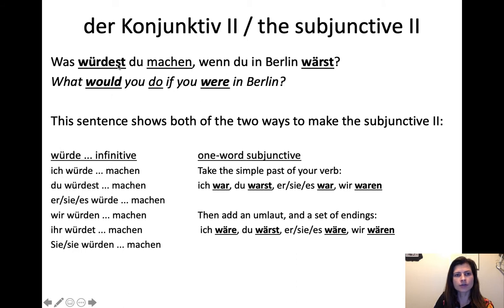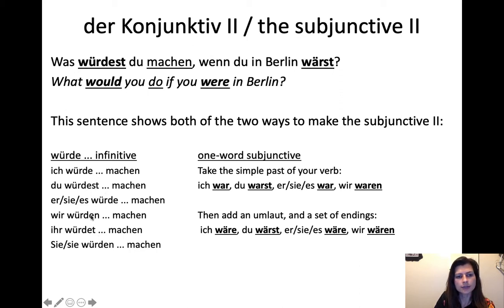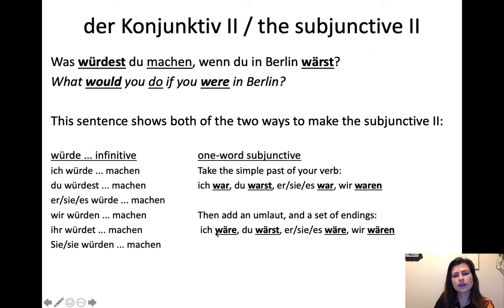Let's look at the würde plus infinitive conjugation. Ich würde machen — I would do. Du würdest machen — you would do. Er/sie/es würde machen. Wir würden machen — we would do. Ihr würdet machen — y'all would do. Sie würden machen / sie würden machen. Important endings: ich and er/sie/es just have -e; du has -est; wir and sie have -en; ihr has -et.